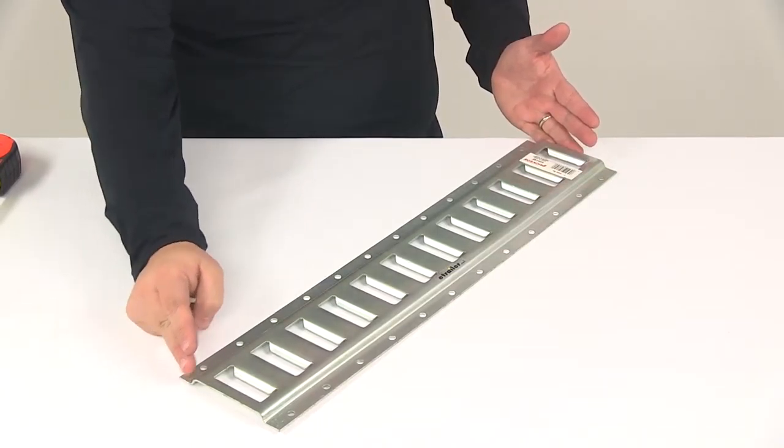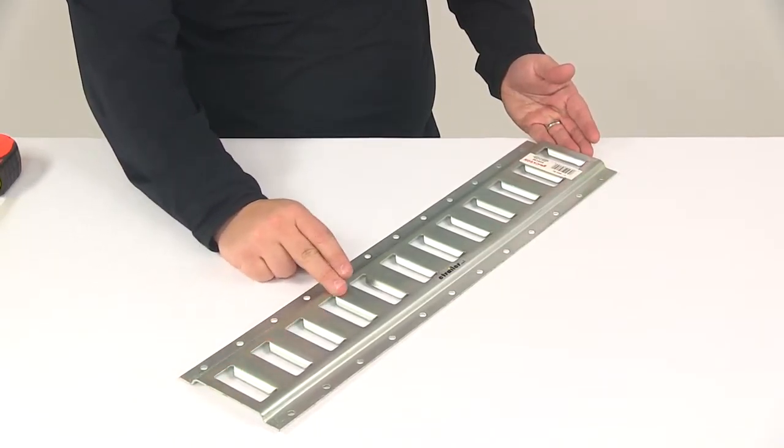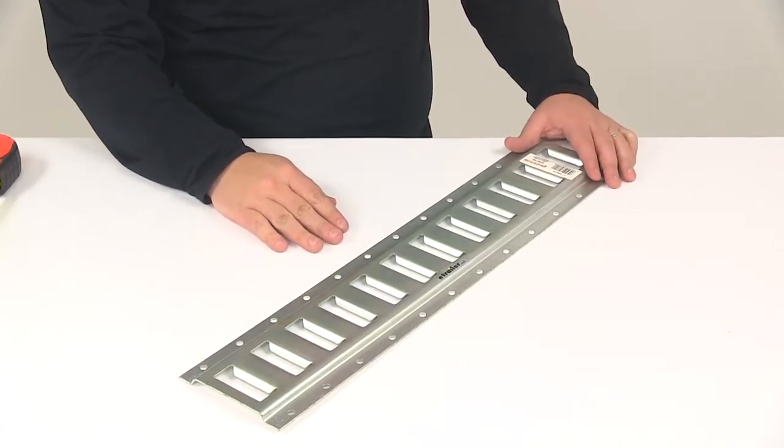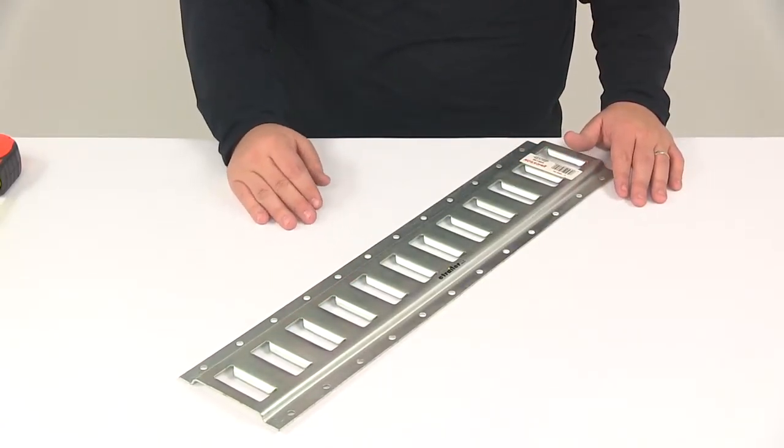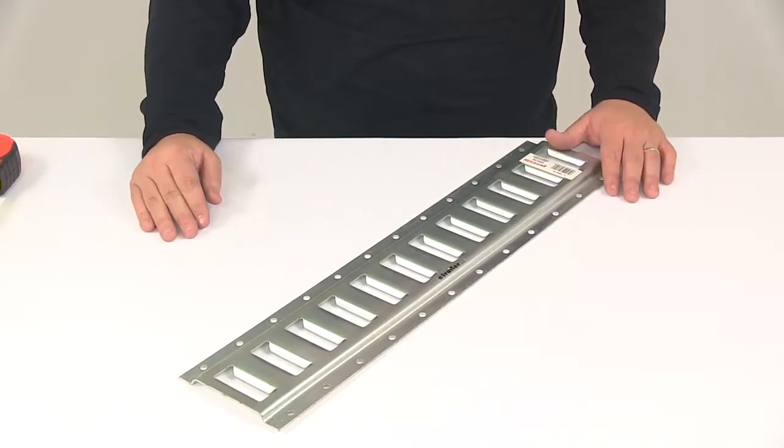The two-foot section provides 12 mounting anchor slots. It's ideal for a wide variety of applications like truck or trailer beds, enclosed trailer floors or walls, utility trailers, whatever the case may be.